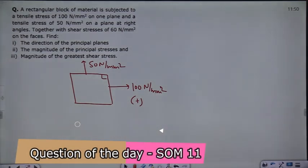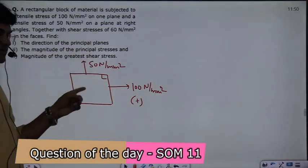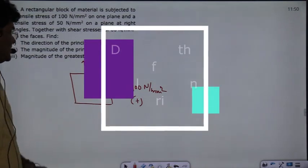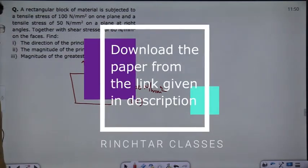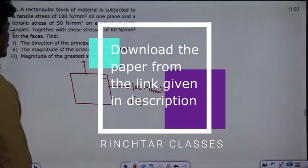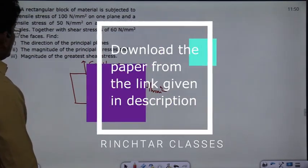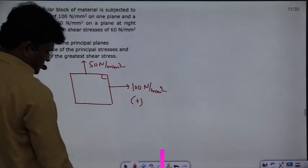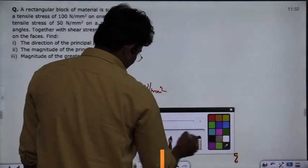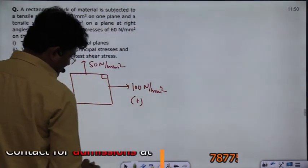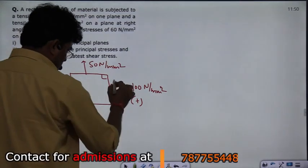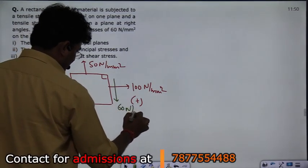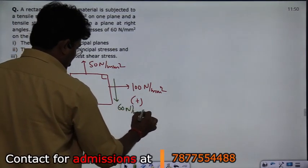In Mohr's Circle, there are diametrically opposite points because it is a double angle in the center. Together with the shear stress of 60 N/mm² — the question also mentions the shear stress — so let's take the shear stress here as 60 N/mm².